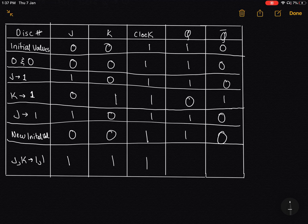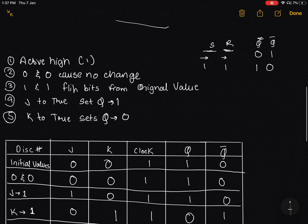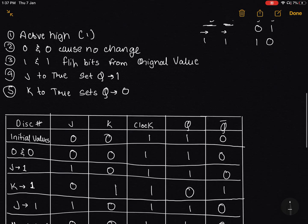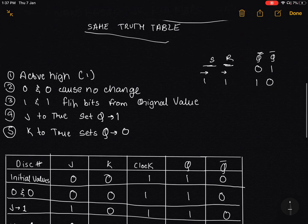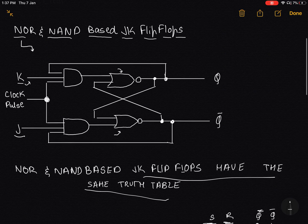So in this case, Q will flip, which becomes from 1 to 0. Q complement also flips; it becomes 1. So guys, actually, this is almost everything you need to know about JK flip flops.